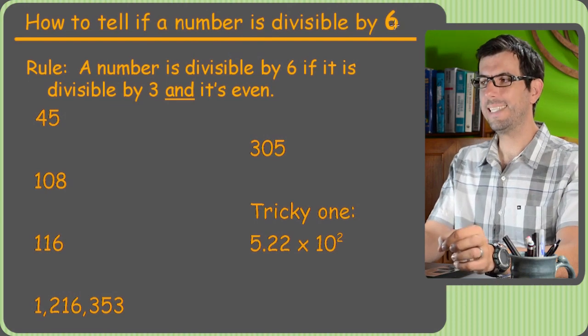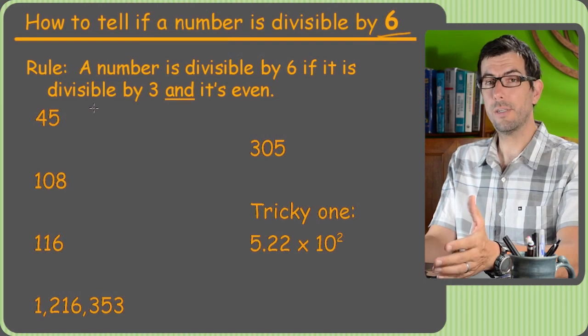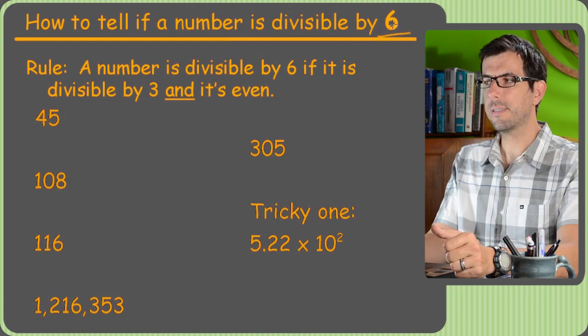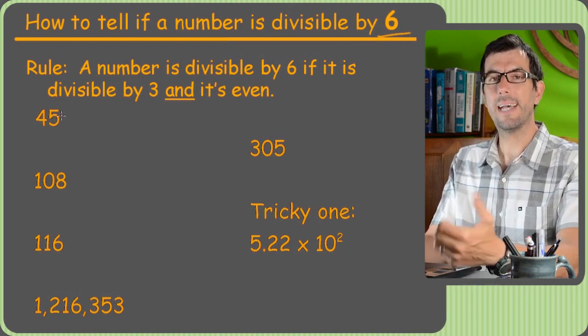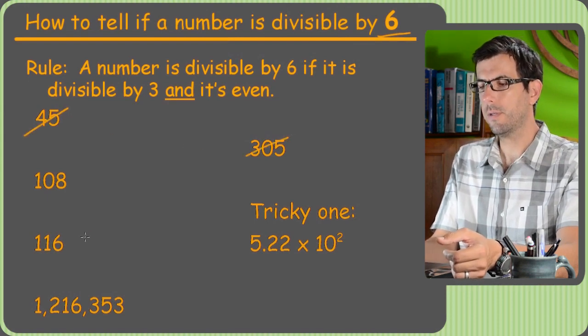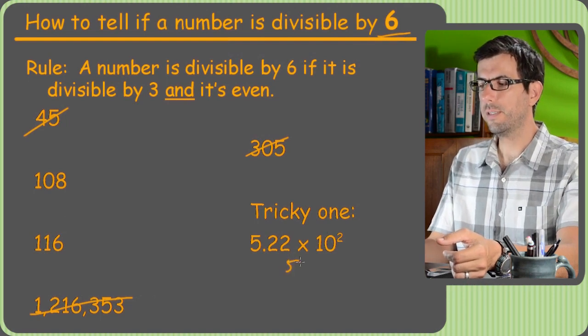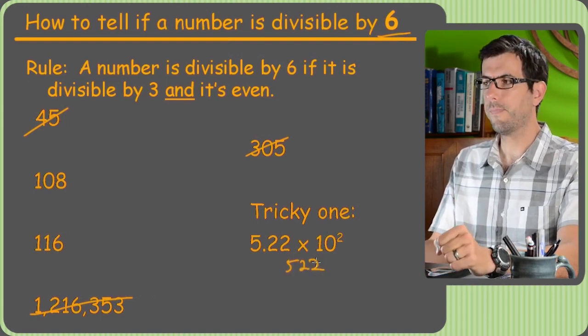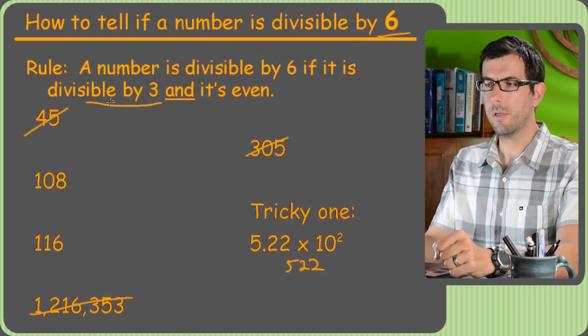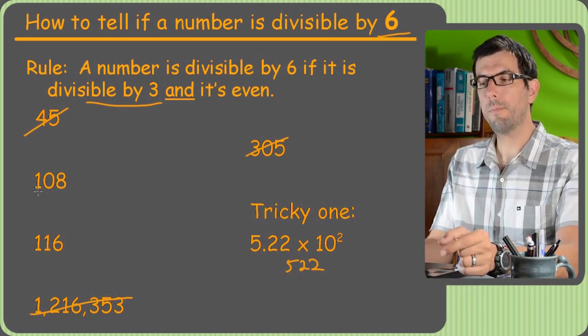How to tell if a number is divisible by 6. All right. This one's kind of fun. It's a combination of the 3 rule and the 2 rule. So basically, because 6 is an even number, the number you're looking at has to be even or 6 won't go into it. So right away, we cross out 45, cross out this one. This one ends in 3, so we cross out that one. This one, remember, is 522, so that one's still under consideration. Now we just got to do the divisibility by 3 rule. So what was that one? We just add up the digits, and if it's divisible by 3, everything's good.